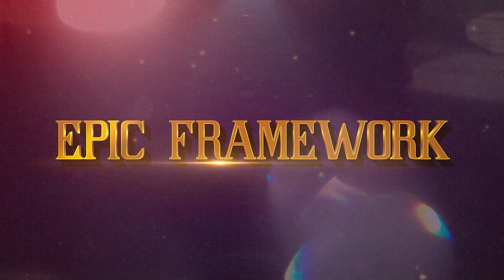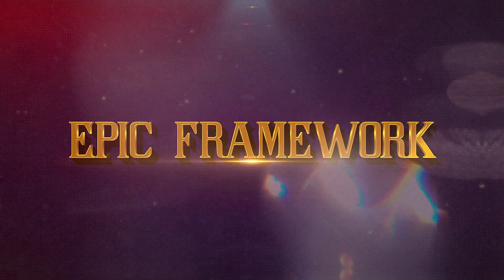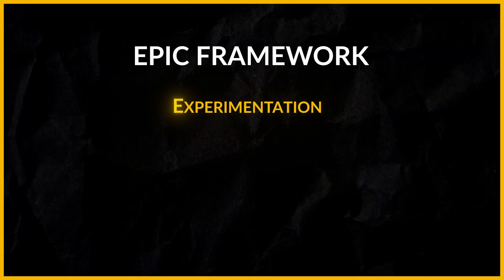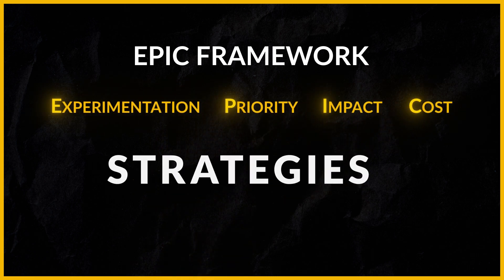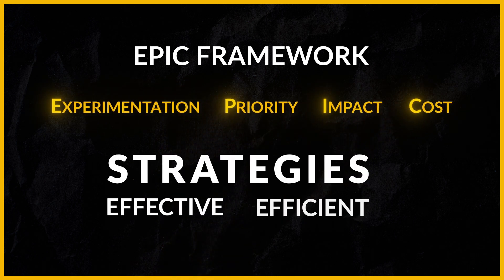Hi there, welcome back to our series on A-B testing. Today we are touching on something that ties everything together: the EPIC framework. It's a straightforward guide aimed at optimizing your digital marketing experiments. EPIC stands for experimentation, priority, impact, and cost — four pillars that ensure your strategies are both effective and efficient. Let me show you how understanding EPIC can streamline your process and save you time and resources. Plus, there's a Google Sheet waiting for you at the end to help kickstart your next project.